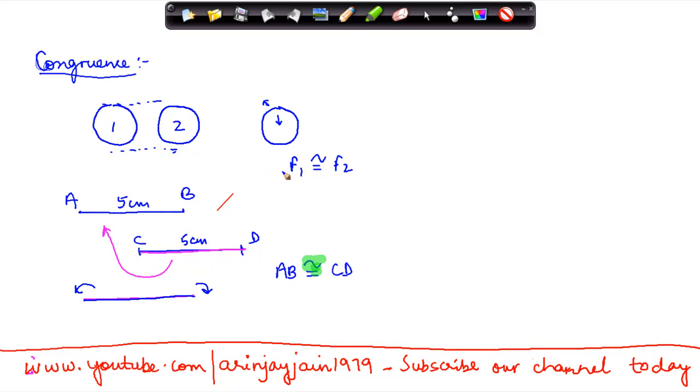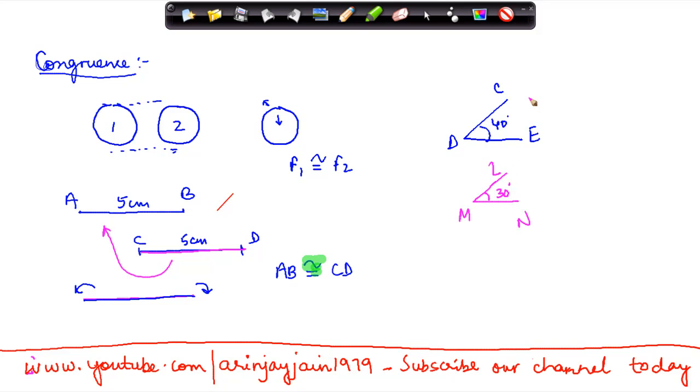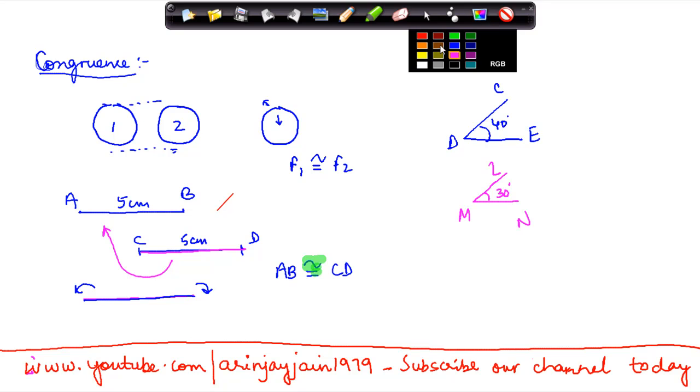Now let us see the congruence of angles. Suppose you have an angle CDE which is 40 degrees and you have another angle LMN which is 30 degrees and you have a third angle ABC.